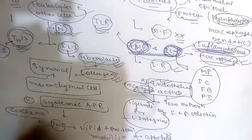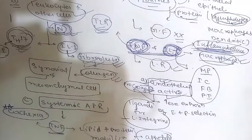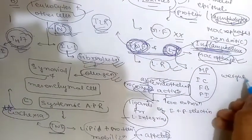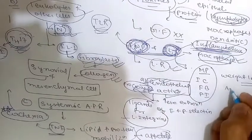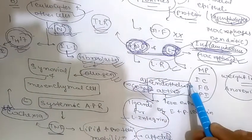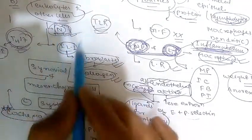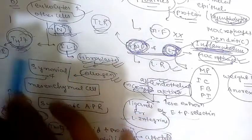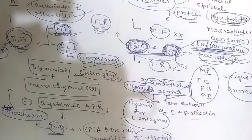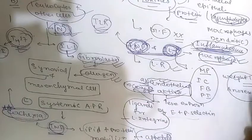Therefore, sustained production of TNF contributes to a condition known as cachexia. Cachexia is a pathological state characterized by weight loss and anorexia. This is a very important point — prolonged synthesis of TNF can cause cachexia, which is characterized by weight loss and anorexia.